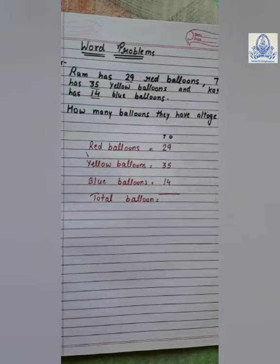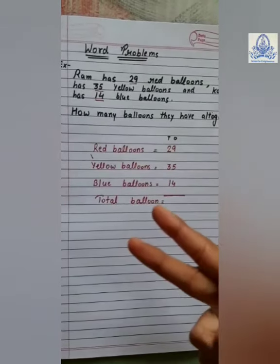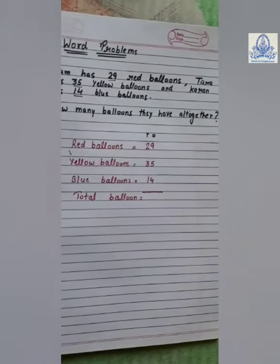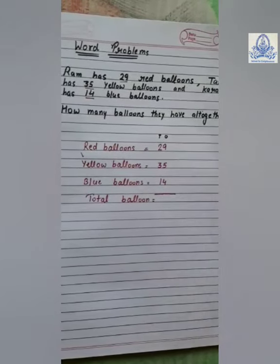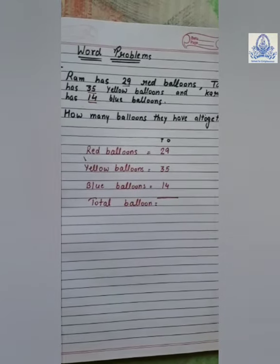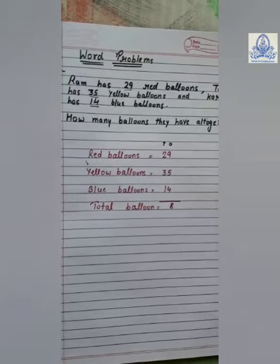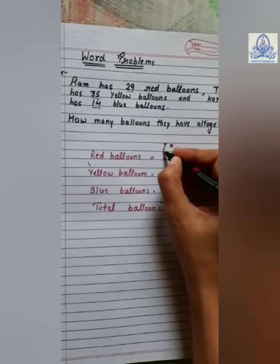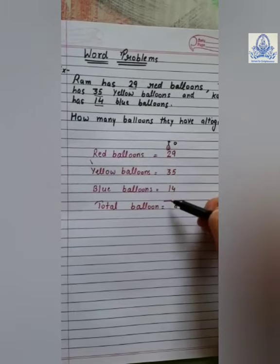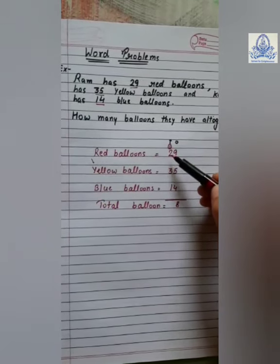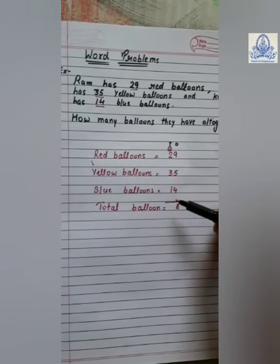Children, count with me. Nine plus five is fourteen. Fourteen plus four is eighteen. Eight will be written at ones place and one will be transferred to tens place. Now, this one will be added in the tens digit numbers. One plus two is three, three plus three is six, and six plus one is seven.